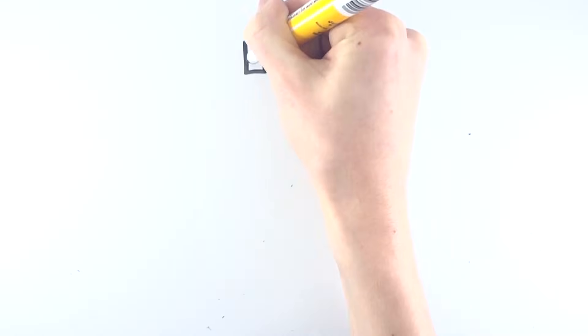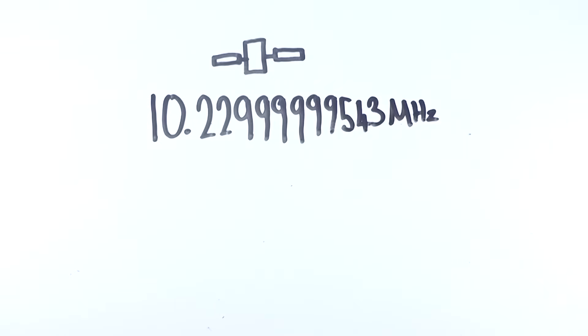This is compensated by the GPS's clock's frequencies being slightly slowed down from 10.23 MHz to 10.22999999543 MHz to cancel out the effects of relativity.